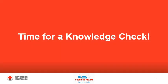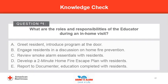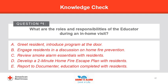Before we wrap up, please reflect on the following questions to see what you remember from this training. Question 1: What are the main roles and responsibilities of the educator? Answer: The main responsibilities include: greet resident; introduce program at the door; engage residents in a discussion on home fire prevention; review smoke alarm essentials with residents; develop a 2-minute home fire escape plan with residents; and report to documenter education completed with residents.